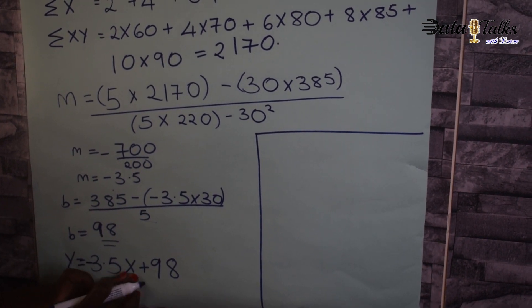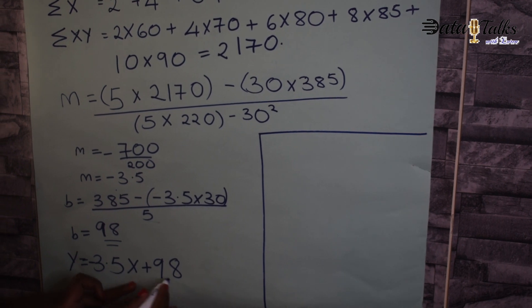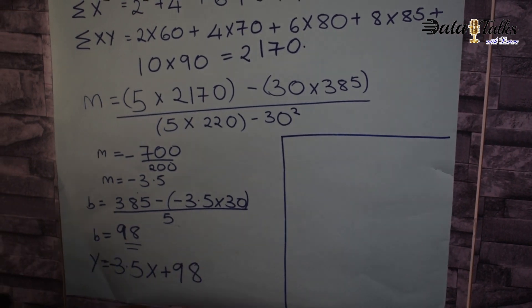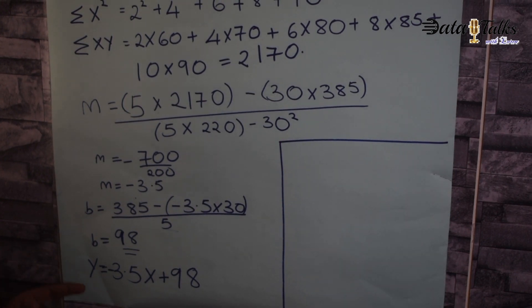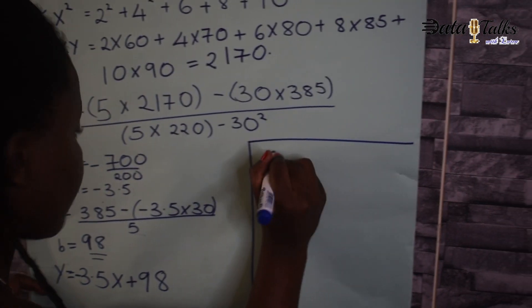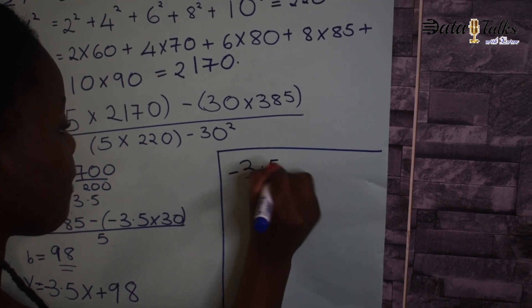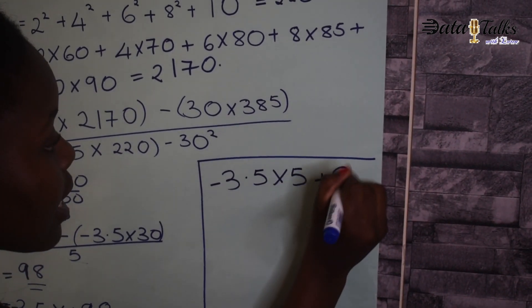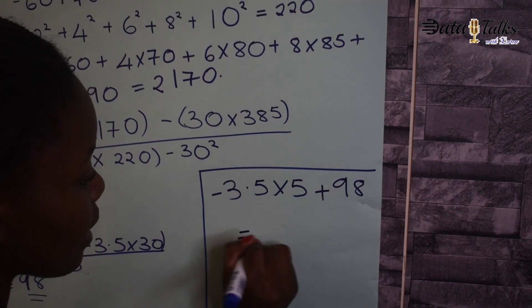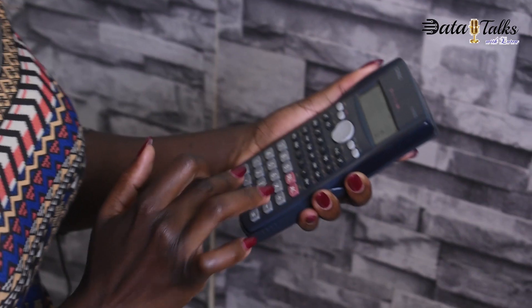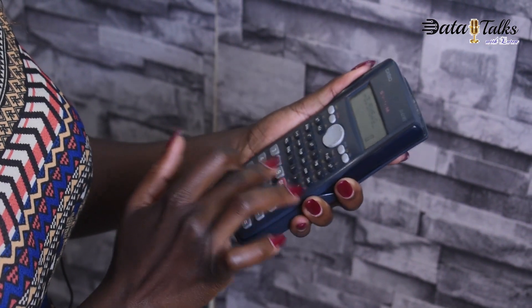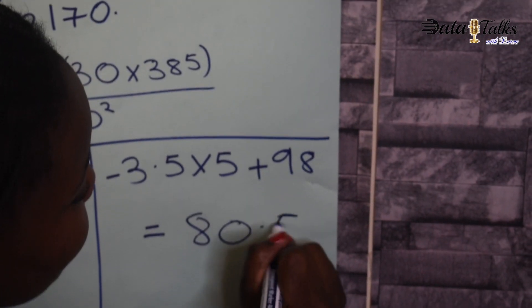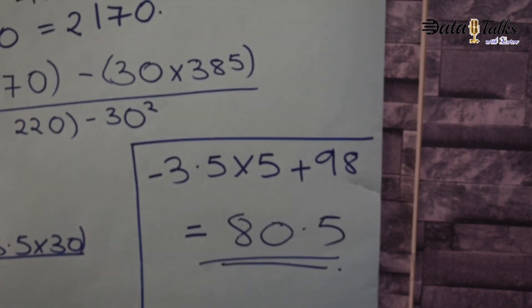So our equation becomes y = −3.5x + 98. The question asked for the score of a student who spent five hours studying, so: −3.5 × 5 + 98 = 80.5. Our final answer is 80.5.